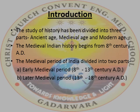The Medieval Indian History begins from the 8th century AD. The Medieval Period of India has been divided into two parts: A) Early Medieval Period, 8th to 13th century AD, and B) Later Medieval Period, 13th to 18th century AD. AD means Anno Domini, meaning 'in the years of Lord.'